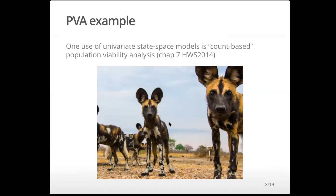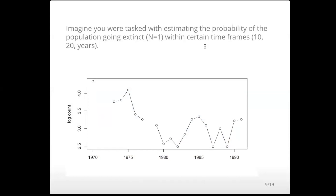Let's see one type of example. There's a chapter on this in the user guide linked on the lecture page. We're going to look at some wild dog data and think about how we might model that. These are actual count data from wild dogs in Africa. Let's imagine you were tasked with estimating the probability that this wild dog population — critically endangered — would go extinct within certain time frames. That's a really standard type of analysis that a population modeler might be tasked with.